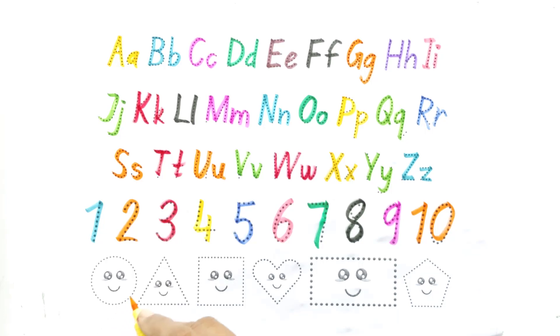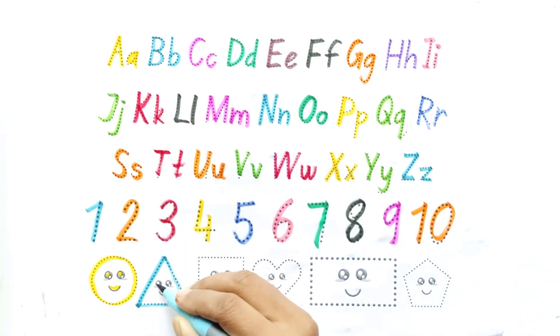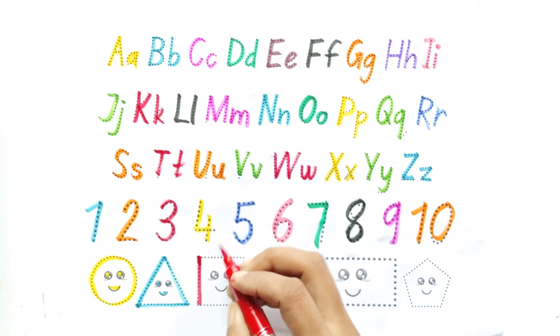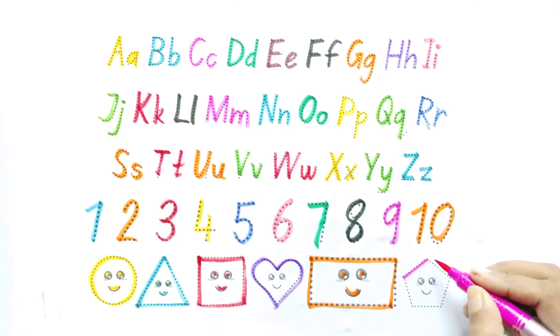Say with me shapes name. Circle, triangle, square, heart shape, rectangle, pentagon.